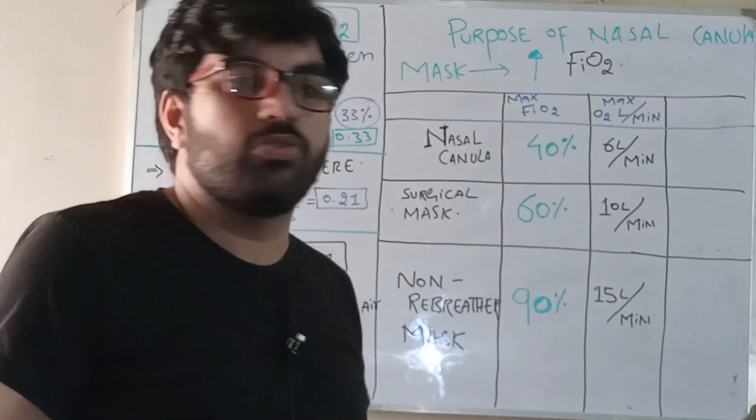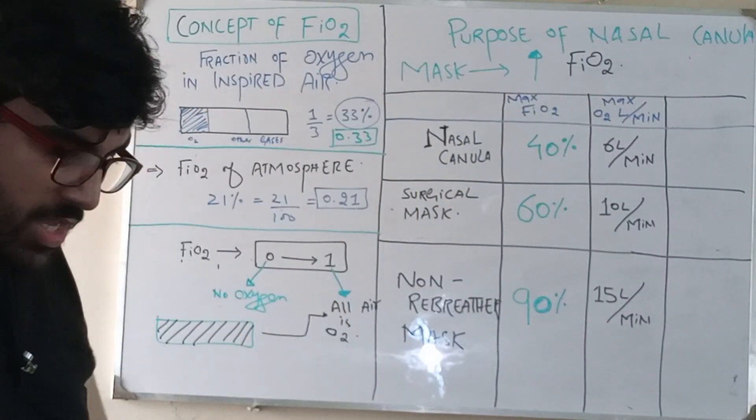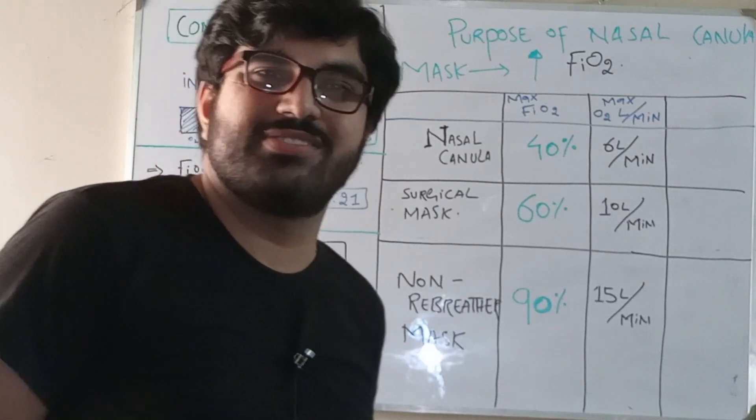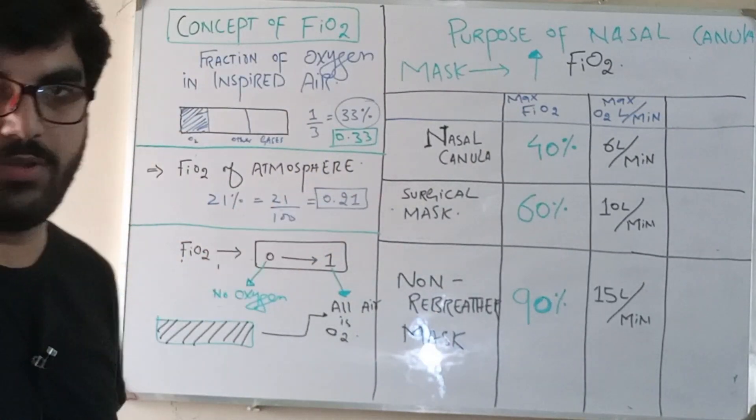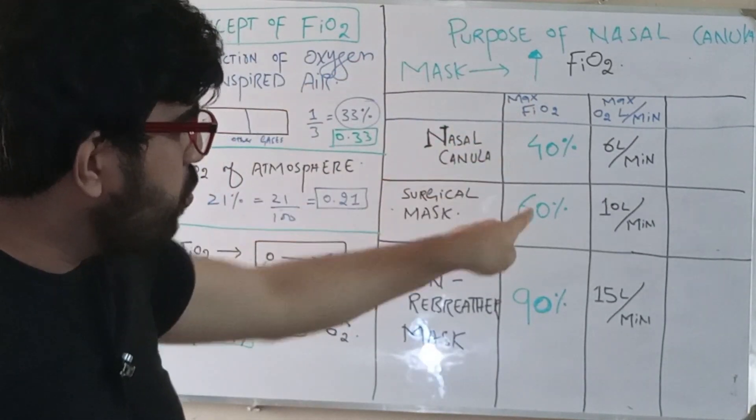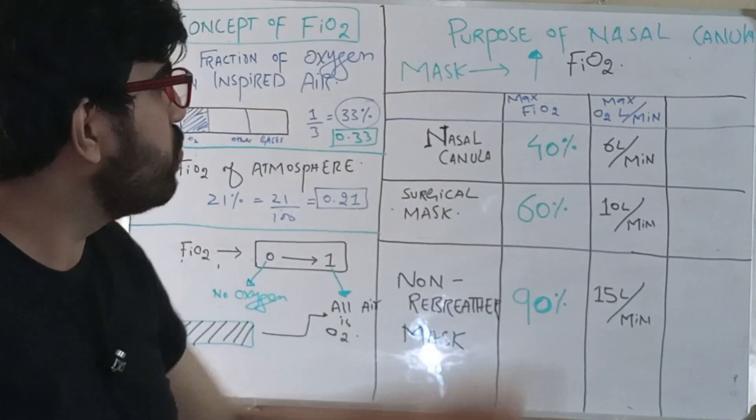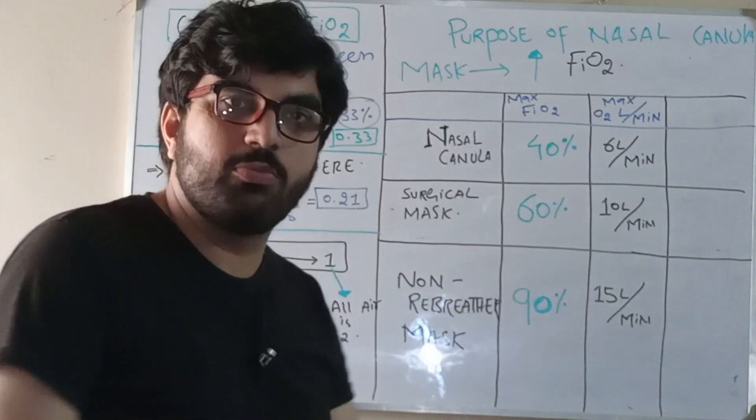Now what is the purpose of nasal cannula or surgical mask? That is to increase FiO2 in atmospheric air. How much FiO2 is a person inhaling? That is 21% or 0.21. The purpose of these devices is to increase FiO2. With nasal cannula, the maximum FiO2 we can give to the patient is 40%, not more than that.